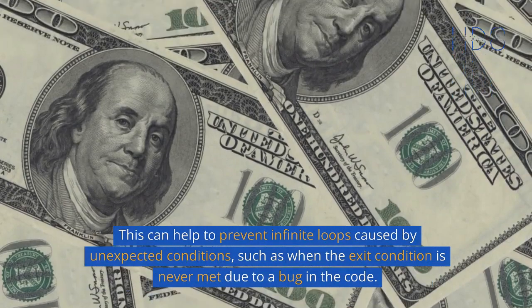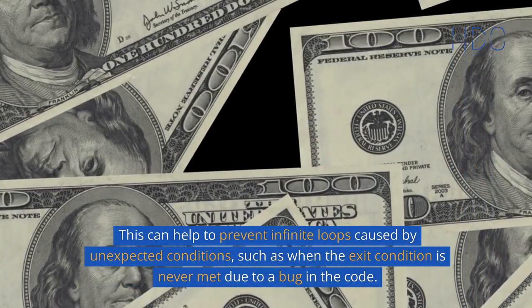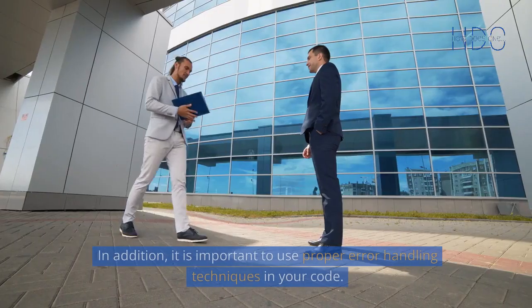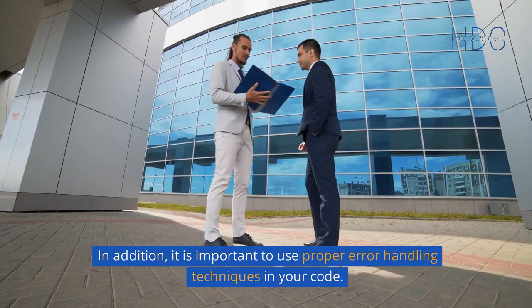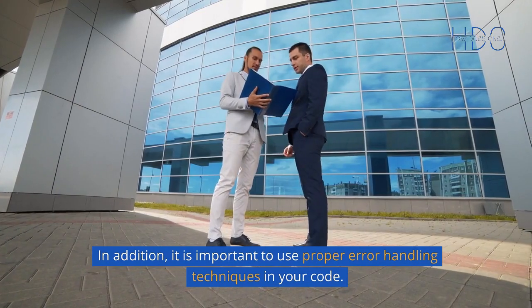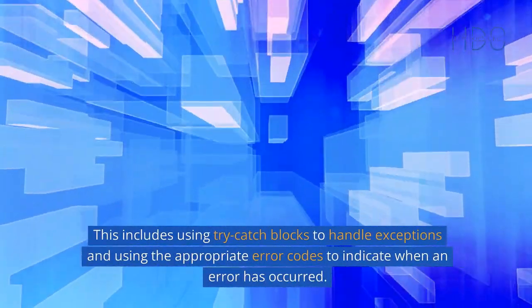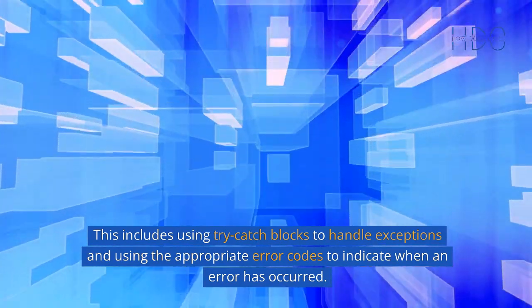This can help prevent infinite loops caused by unexpected conditions, such as when the exit condition is never met due to a bug in the code. In addition, it is important to use proper error handling techniques in your code, including using try-catch blocks to handle exceptions and using appropriate error codes to indicate when an error has occurred.